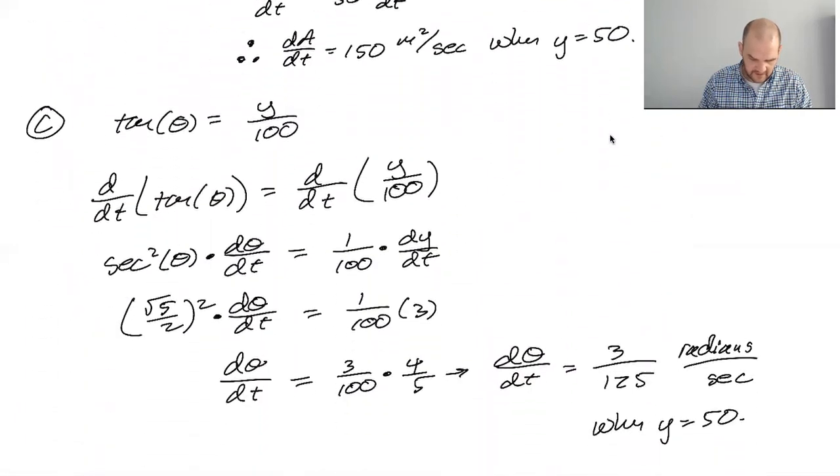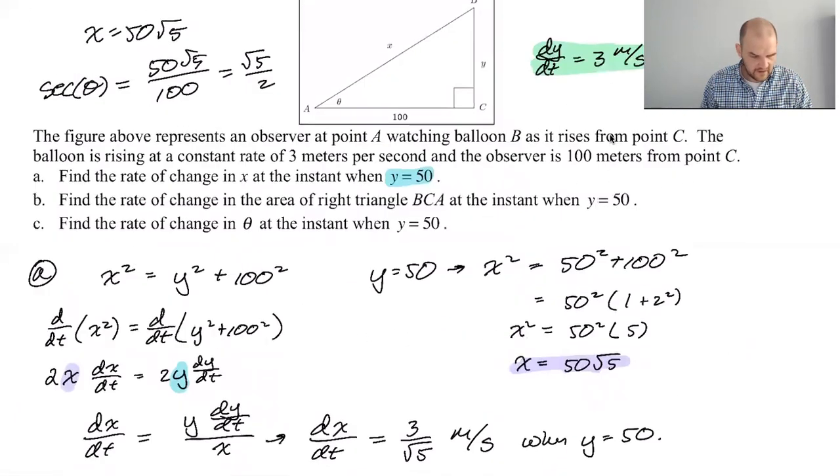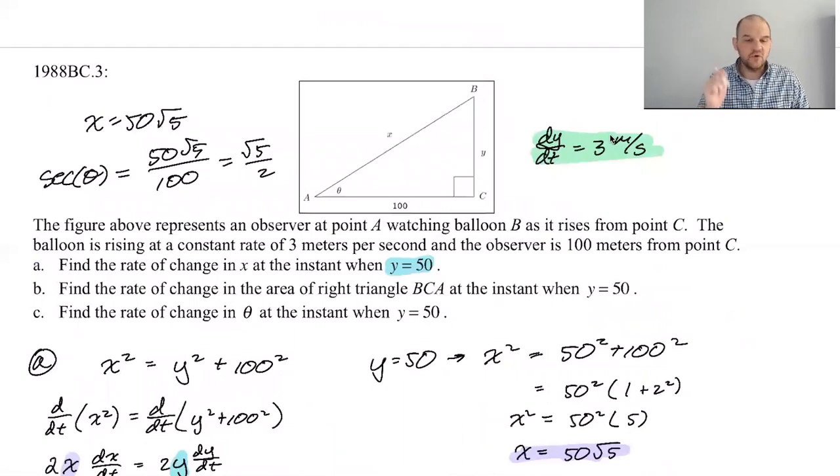Anyway, I think these are our answers. And so, that is 1988 BC three, but it's totally a Calc AB question. I don't, I don't know why it was BC. So anyway, I hope this was helpful and good luck.